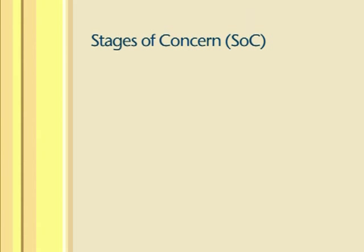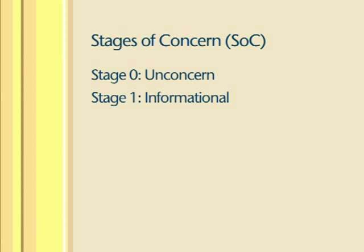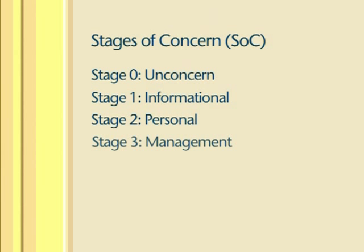There are seven stages of concern, numbered from zero to six. Stage zero is where the individual is unconcerned — indicating little concern or involvement with the innovation. Stage one is where the user has informational concerns and would like to know more. Stage two is where the user has personal concerns about how using the innovation will affect him or her. Stage three is where the user has management concerns, primarily about managing processes, tasks, and resources.